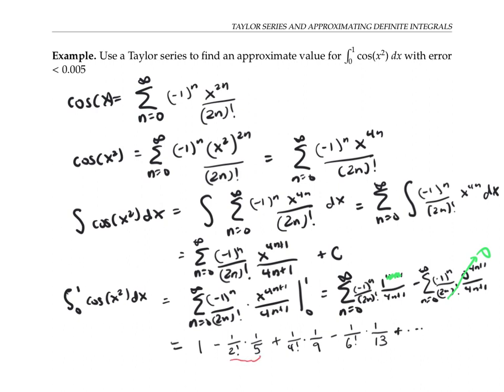Plugging a few of these terms into my calculator, I get that this term, this third term, with the 1 over 4 factorial times 1 ninth, is already 0.0046297. It's already less than 0.005.